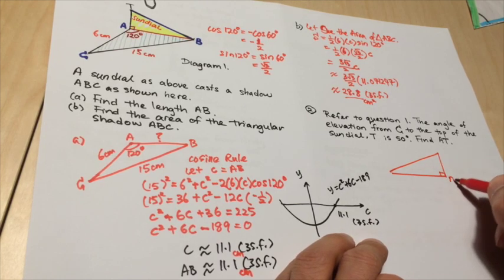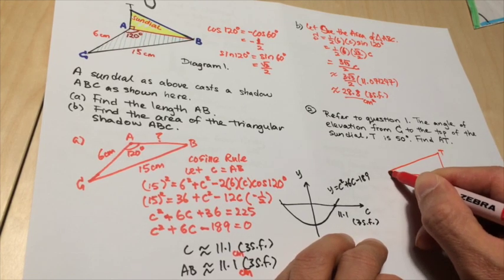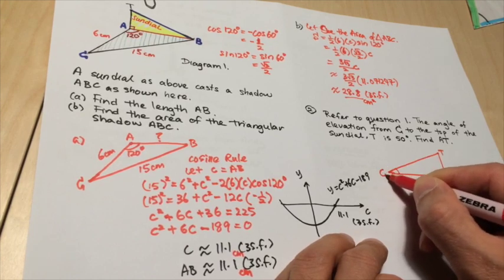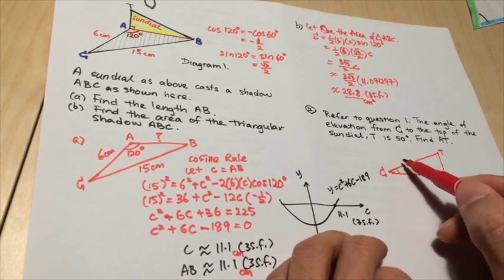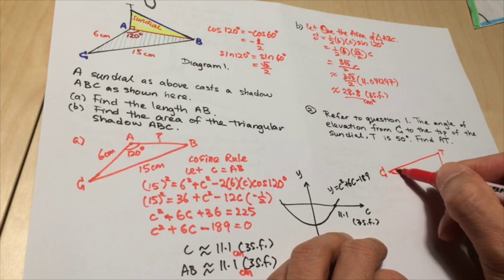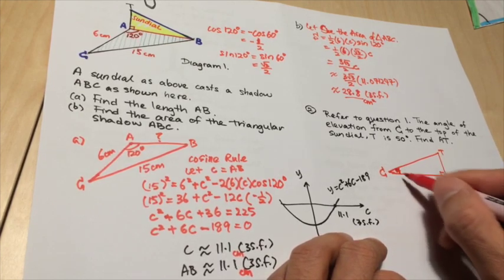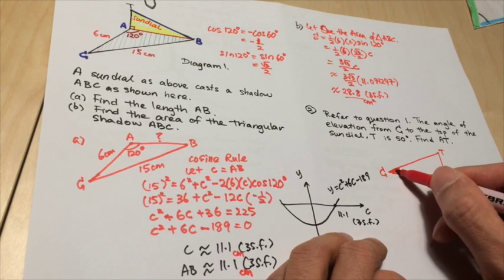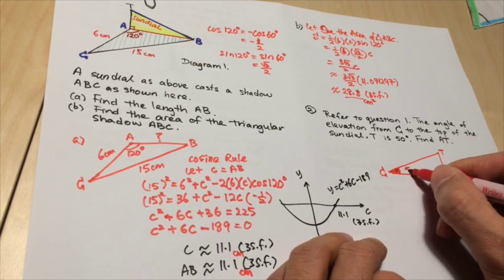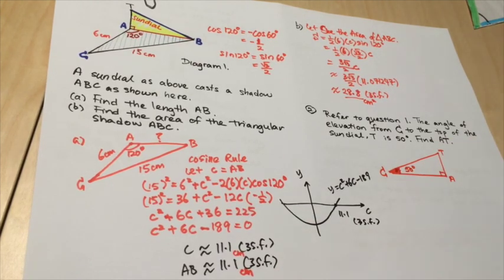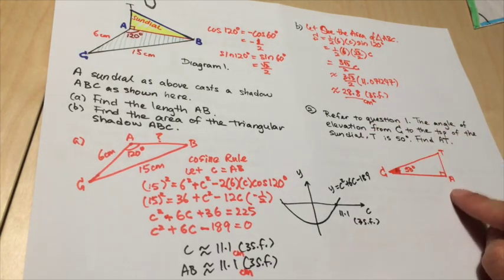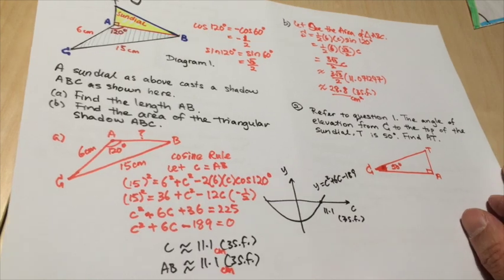This is A, here is T, and this is C. This angle is like somebody looking up to T. This is called the angle of elevation. And this angle of elevation is given as 50 degrees at the moment. So again, it's good to redraw an appropriate diagram as part of your working.